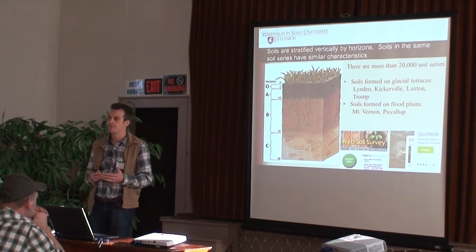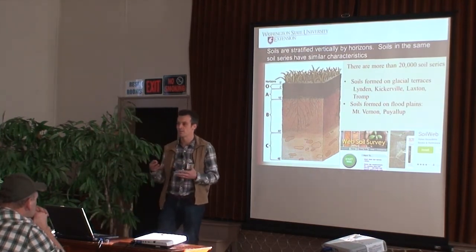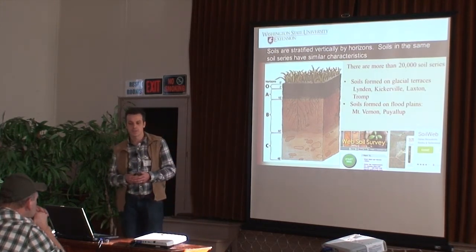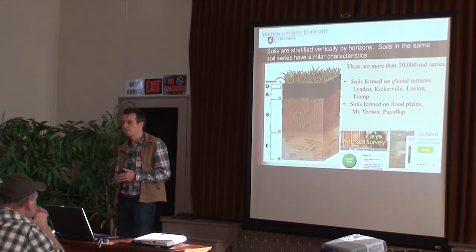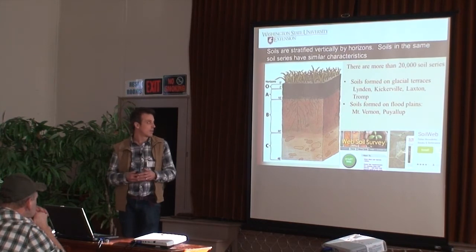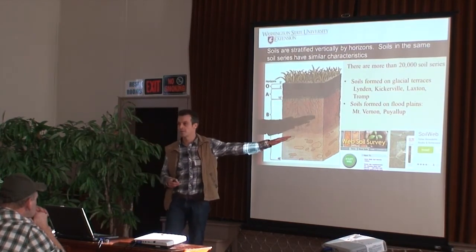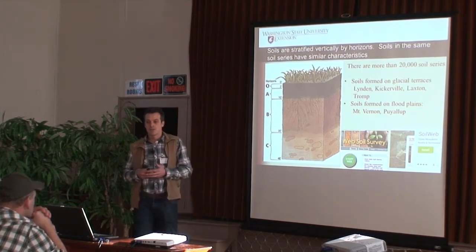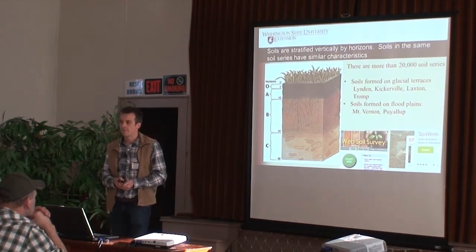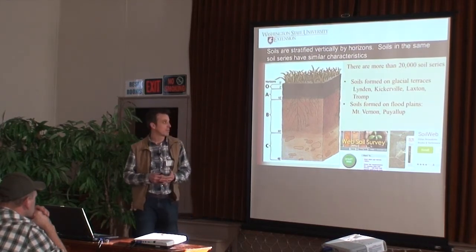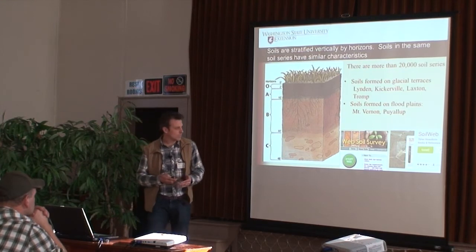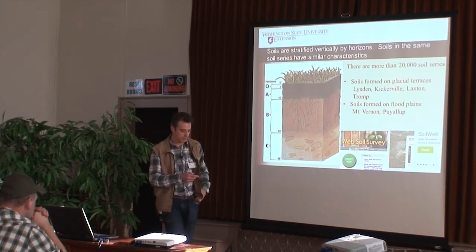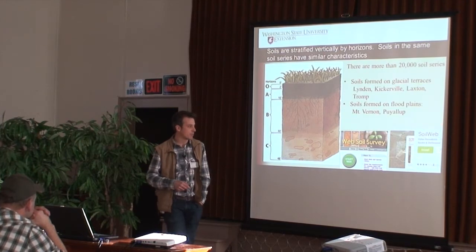Soil series often have geographical names, having to do with those five soil-forming factors. You don't get the same five factors combining exactly the same in any one area. So soil series like Linden, Kickerville, Laxton, and Tromp tend to have names indicating where they are in space. For example, a Puyallup soil you can obviously find in the Puyallup area, but you can also find it up here because conditions are similar enough. Once you know your soil series, you can get a lot of information about your soil — there are more than 20,000 soil series, and your nutrient management plan would probably identify what soil you have.